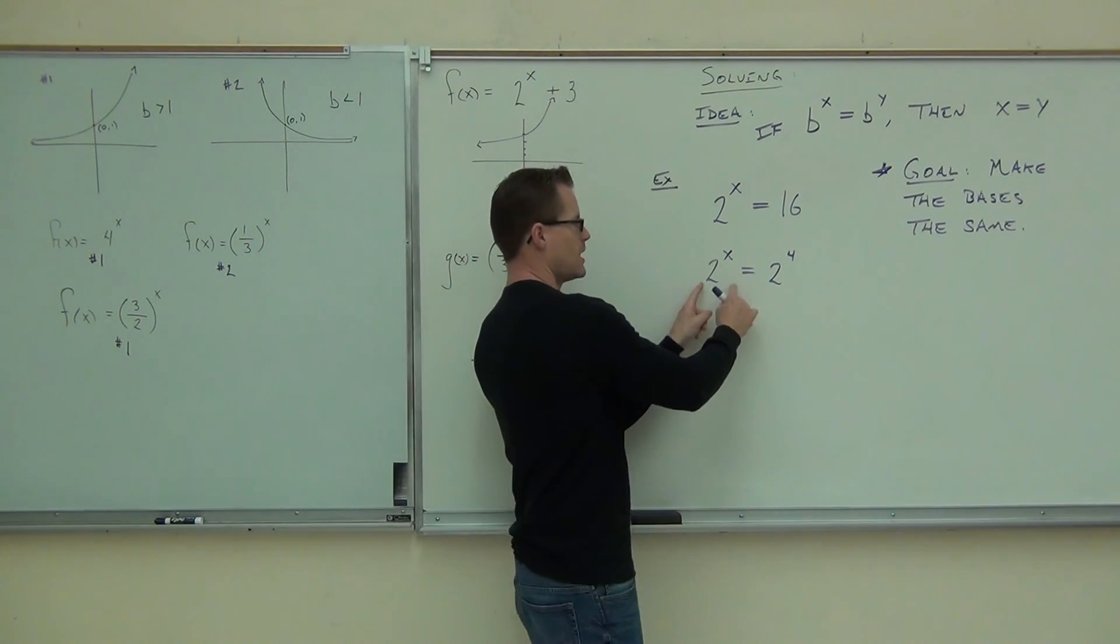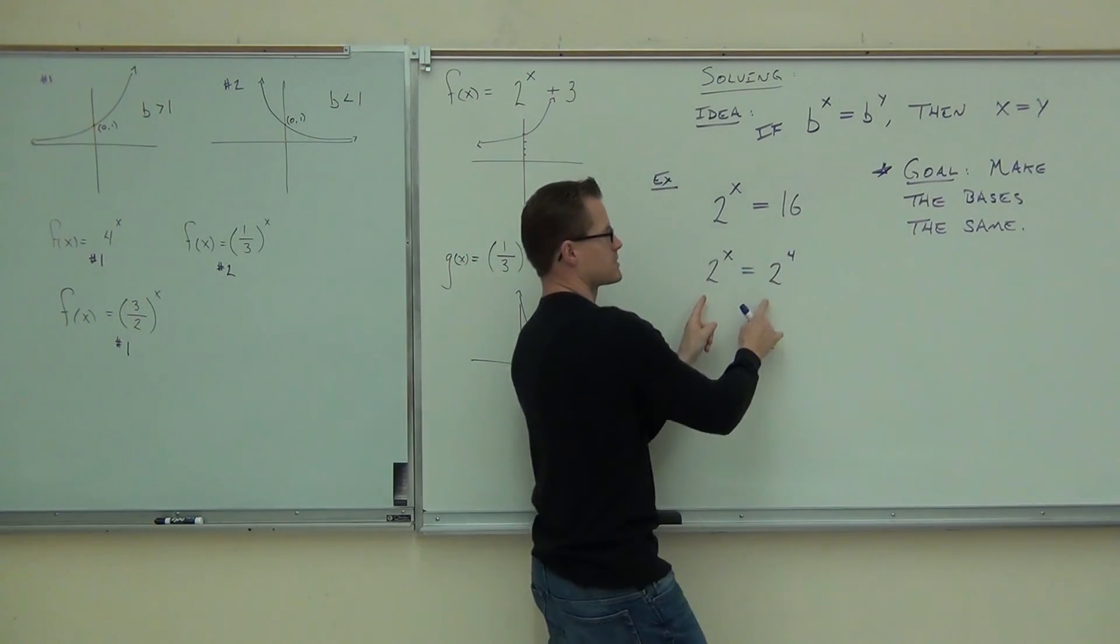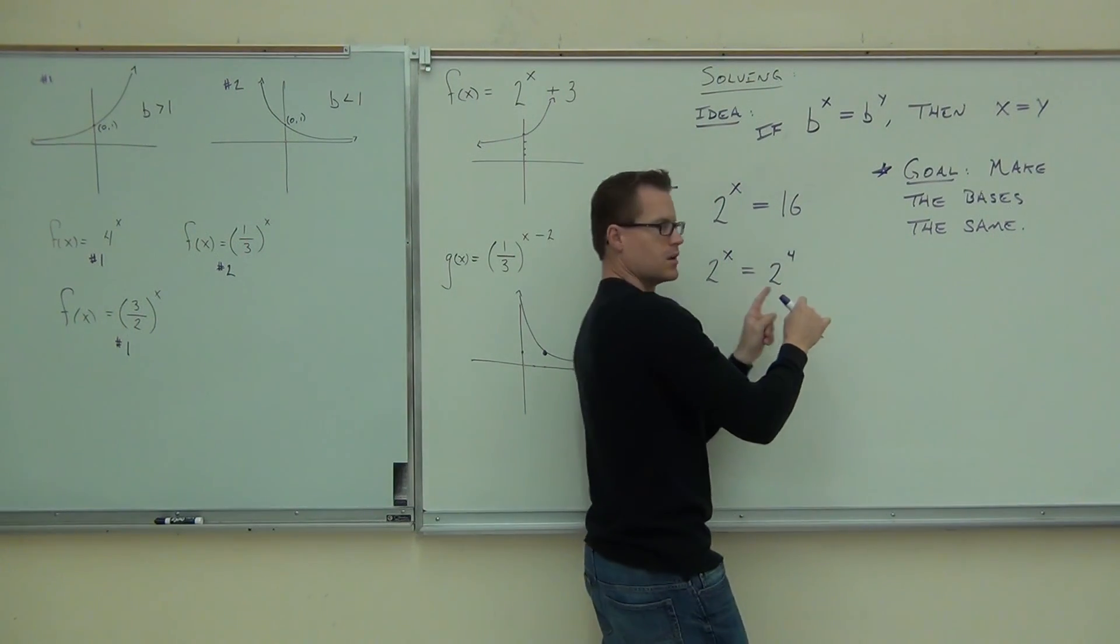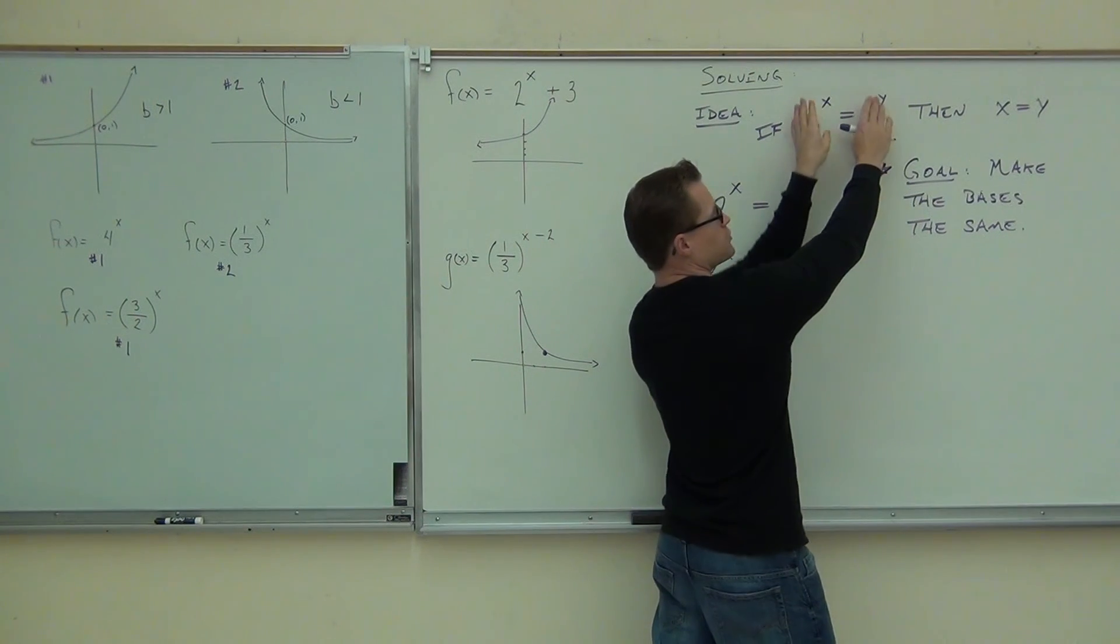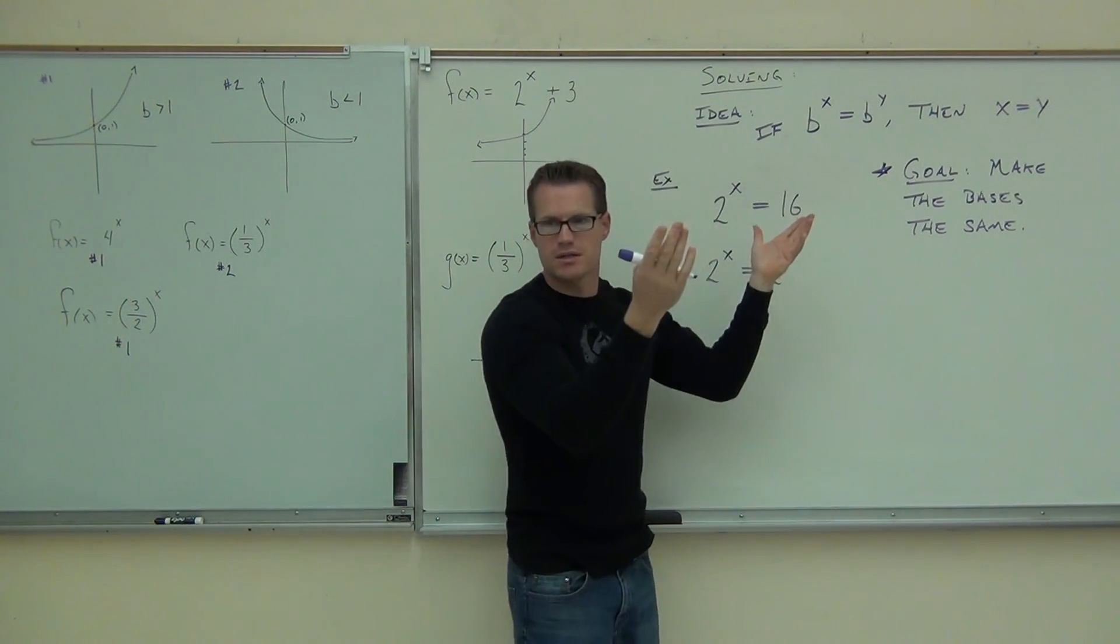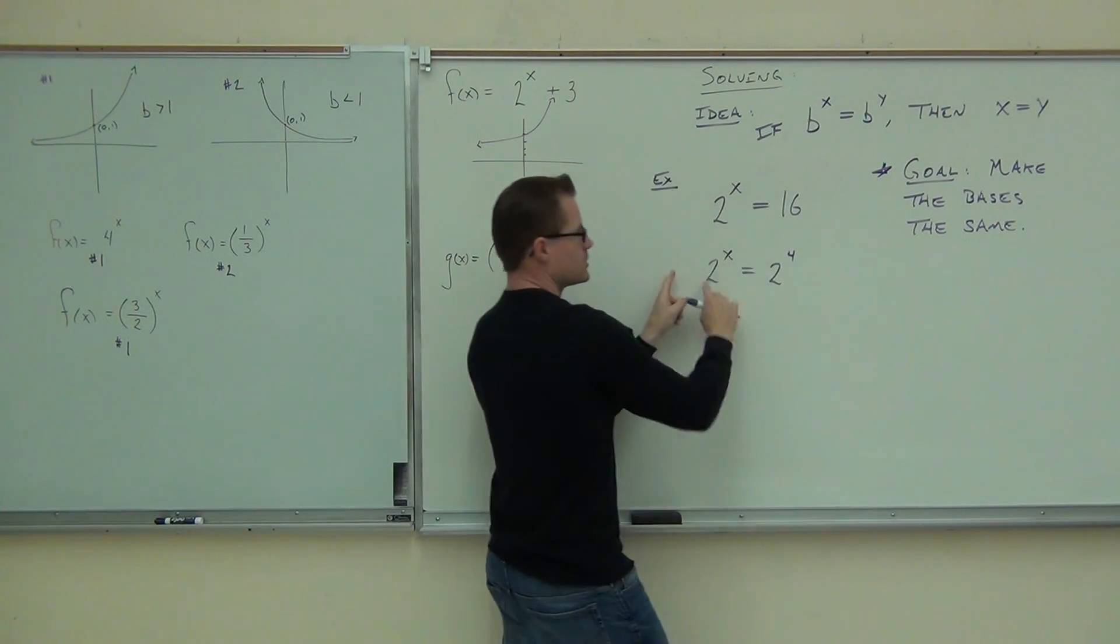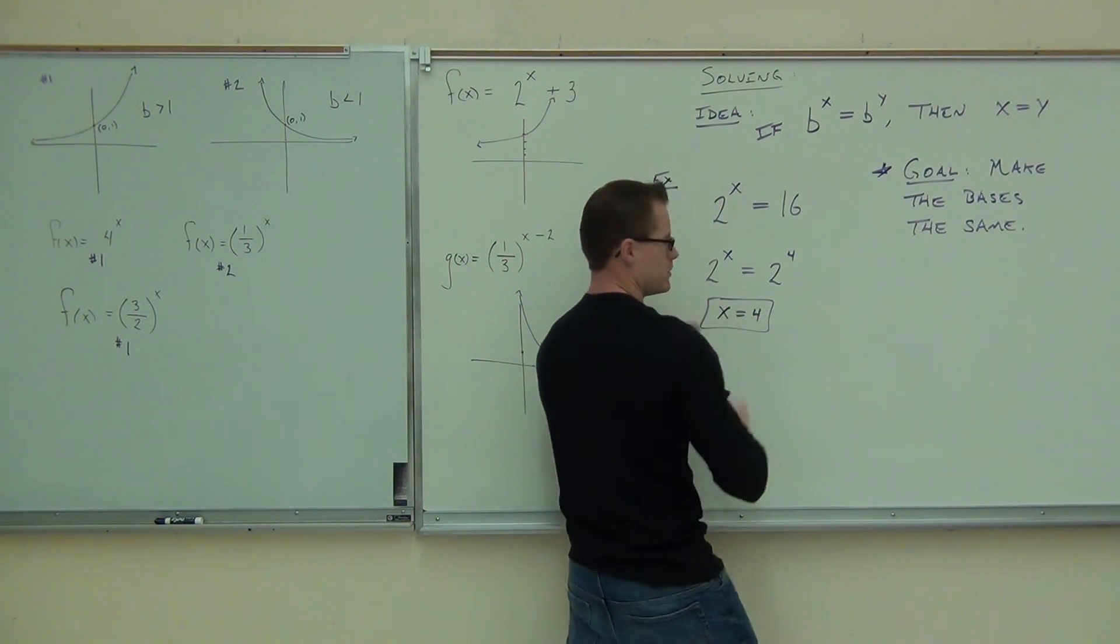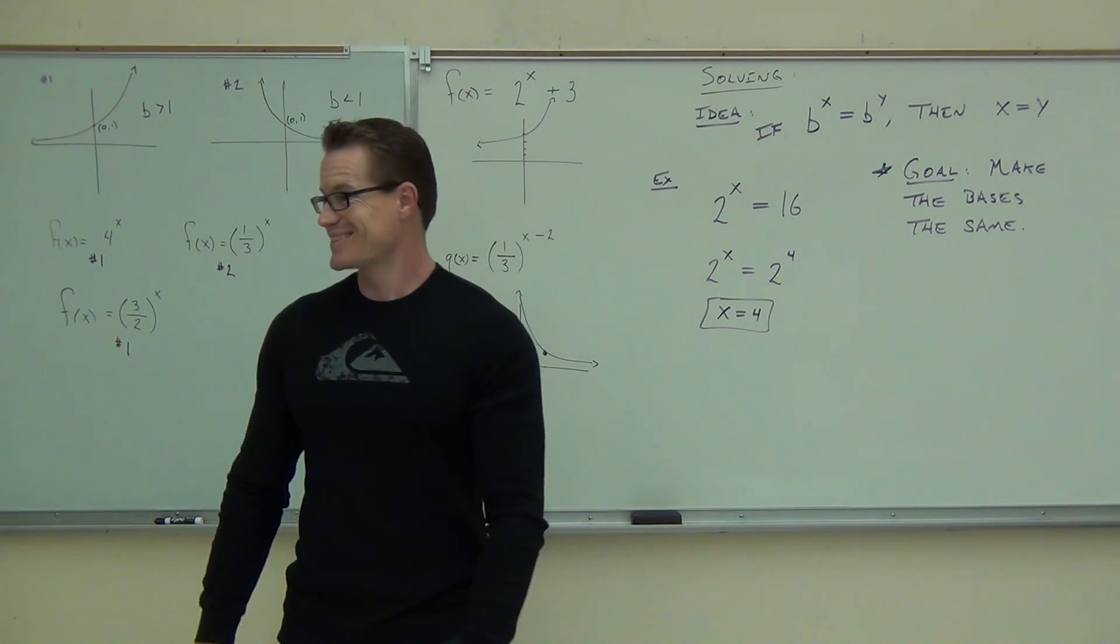So why does it work for us? Well, shoot. I mean, if you have this, look at this statement. It looks identical to that, except in this case, b is 2 and your y is 4, right? Well, look at the next thing we can do. Essentially, we can drop our bases. Do you see that? If the bases are the same, you can drop your bases. You go, oh, b to the x equals b to the y. That means x equals y. Well, 2 to the x equals 2 to the 4th, that means x equals 4. Do you know? Isn't that kind of neat? Yeah, that's cool, right?